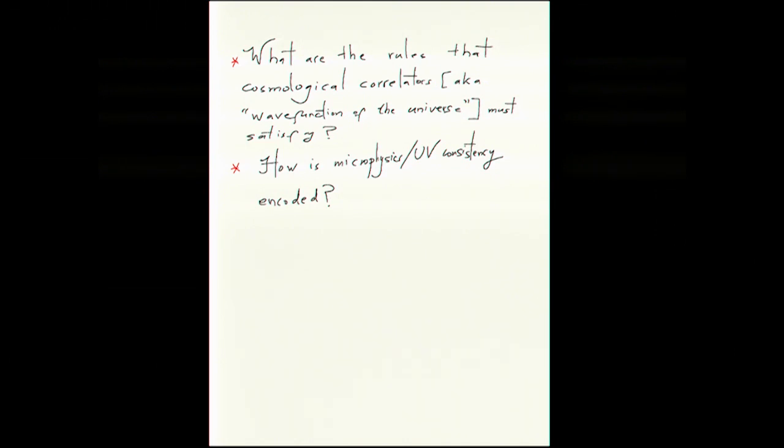And a more specific question is how is microphysics and ultraviolet consistency encoded in these rules? Again, we all have the feeling that cosmology arises from microphysics. The microphysics, perhaps for the reasons we talked about before, the only weakly coupled UV completion there would even be stringy. But how is all of that information encoded in the actual cosmological observables?